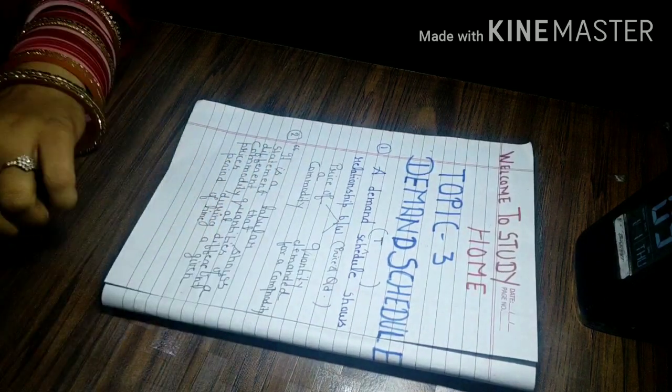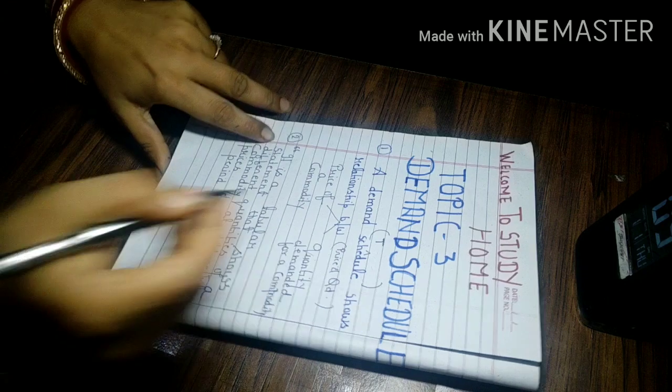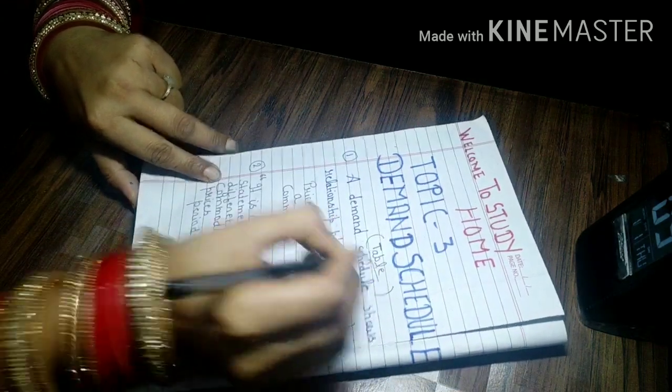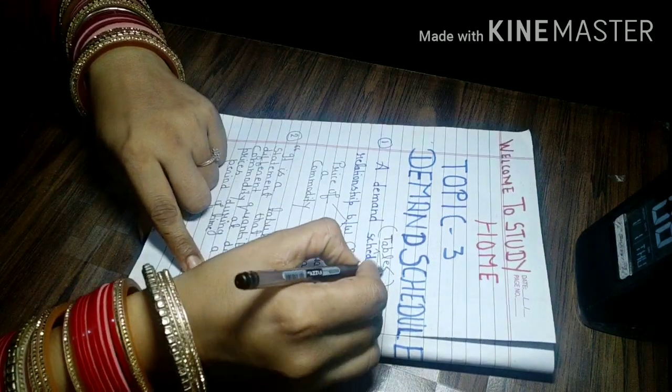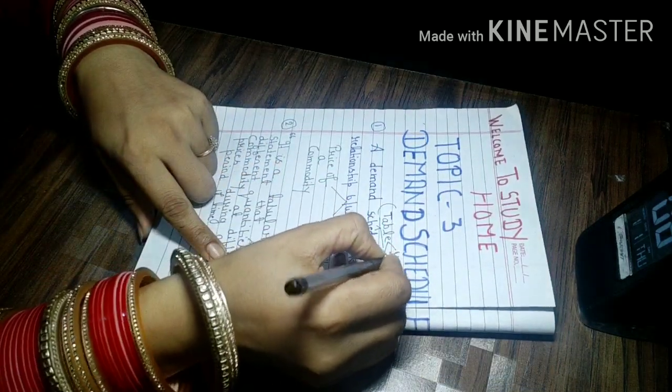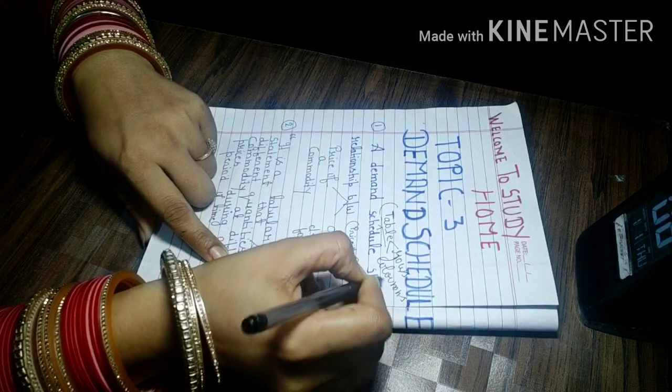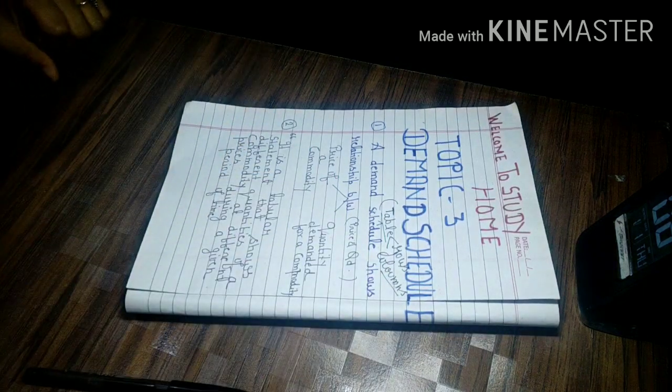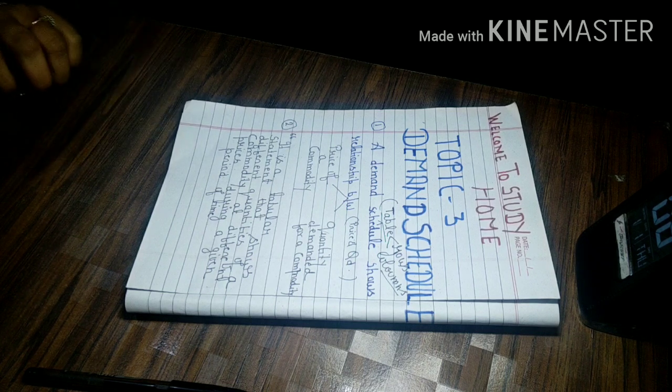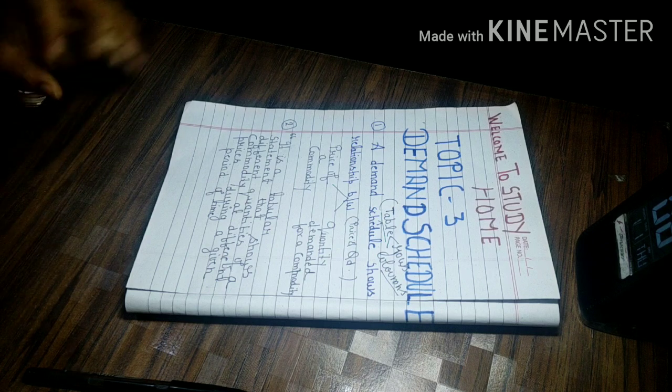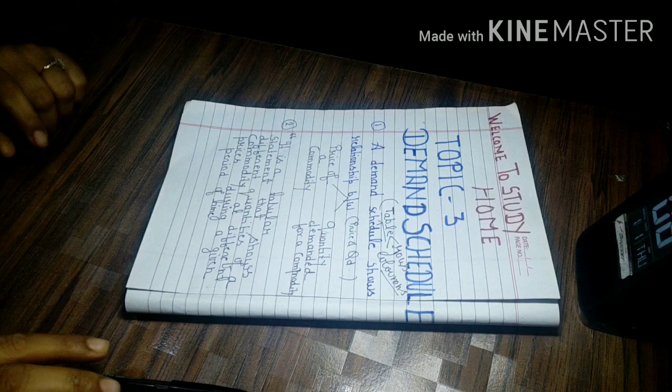Here the word Schedule, we have to focus on the word Schedule. Schedule means any table. Table is always in the form of rows and columns. Demand Schedule also shows relationship between price and quantity demanded but we should focus that it shows relationship not in the paragraphs but in rows and columns.